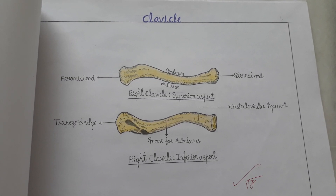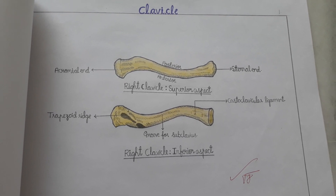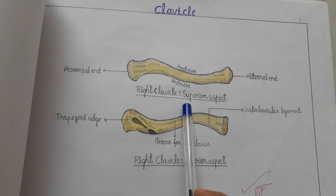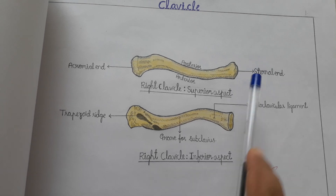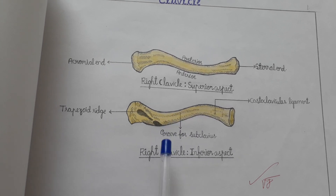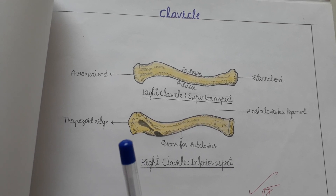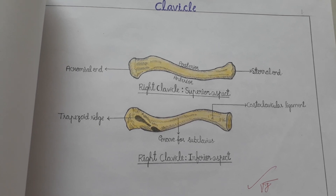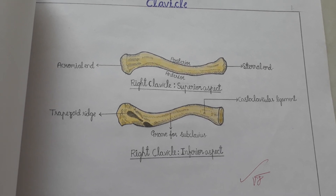The first one is the clavicle. Here we are seeing the right clavicle — superior aspect and inferior aspect. In the superior aspect we are seeing the acromion and sternal end, and here the trapezoid region and groove for subclavius. For the inferior aspect, this bone and all the bones and organs were taught by the anatomy department.